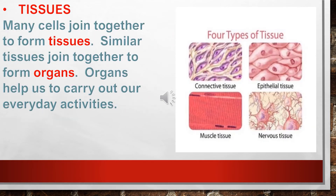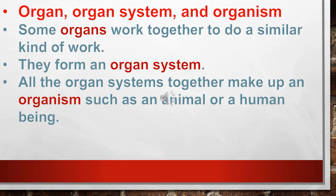Tissues — many cells join together to form tissues. Similar tissues join together to form organs. Some organs work together to do a similar kind of work; they form an organ system. All the organ systems together make up an organism, such as an animal or a human being.